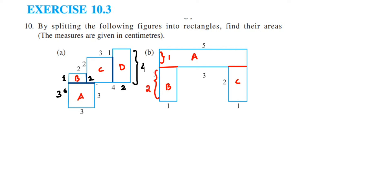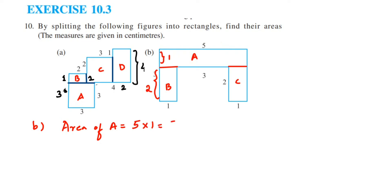This is the second question. Area of A: it's a rectangle, so area equals length times breadth. The length is 5 and the breadth we found is 1, so 5 × 1 = 5 centimeters squared.